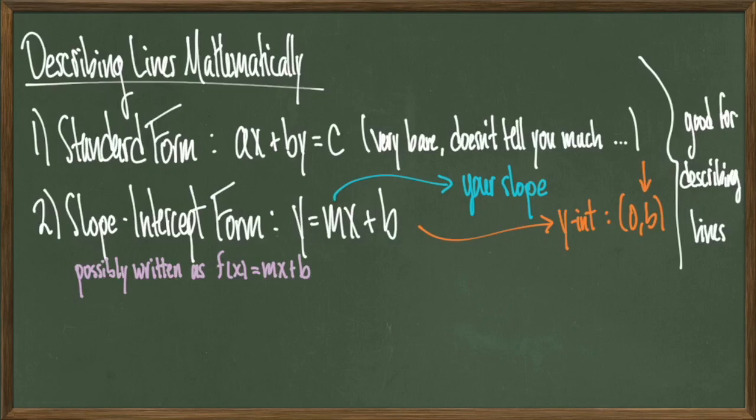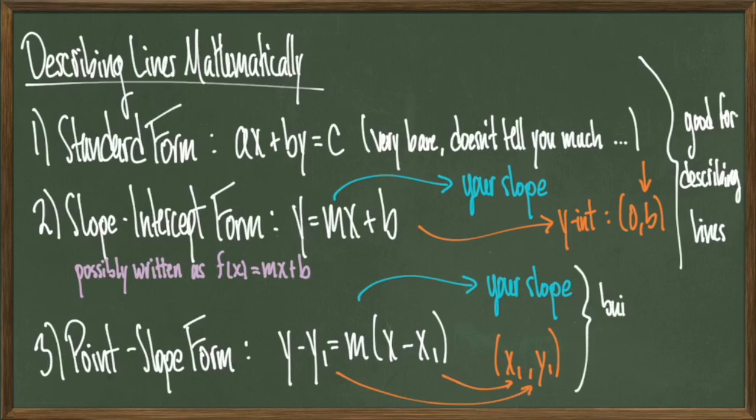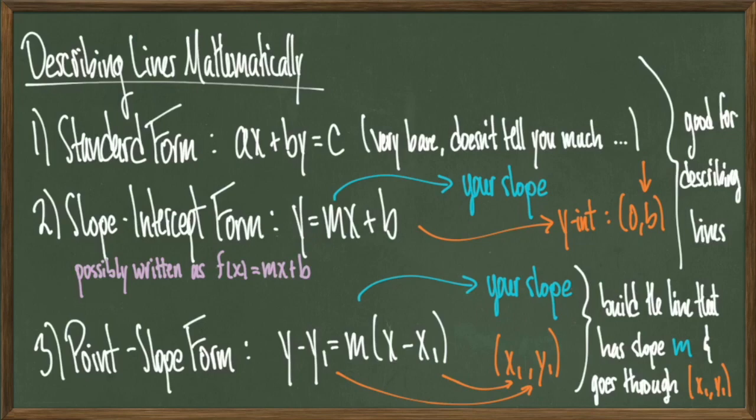However, there are situations where we might have to build lines from scratch. If we're building a line, we need two pieces of information. We need its slope and we just need a point on the xy plane that the graph goes through. Once we have that information, we can plug that into something called point-slope form, which looks like y minus y1 equals m times x minus x1. Here m still denotes your slope, but the point x1, y1 will be just some point that our line has to go through. So like I said, point-slope form is good for building lines, where standard form and slope-intercept form are good for reading off information about lines.